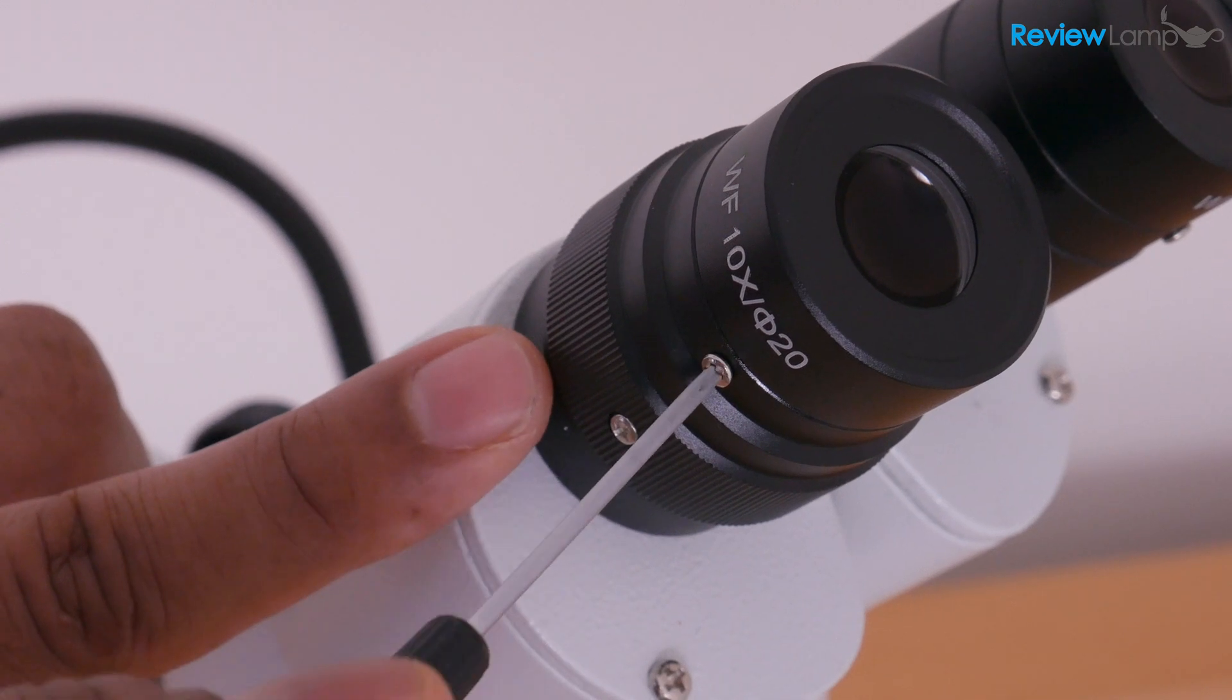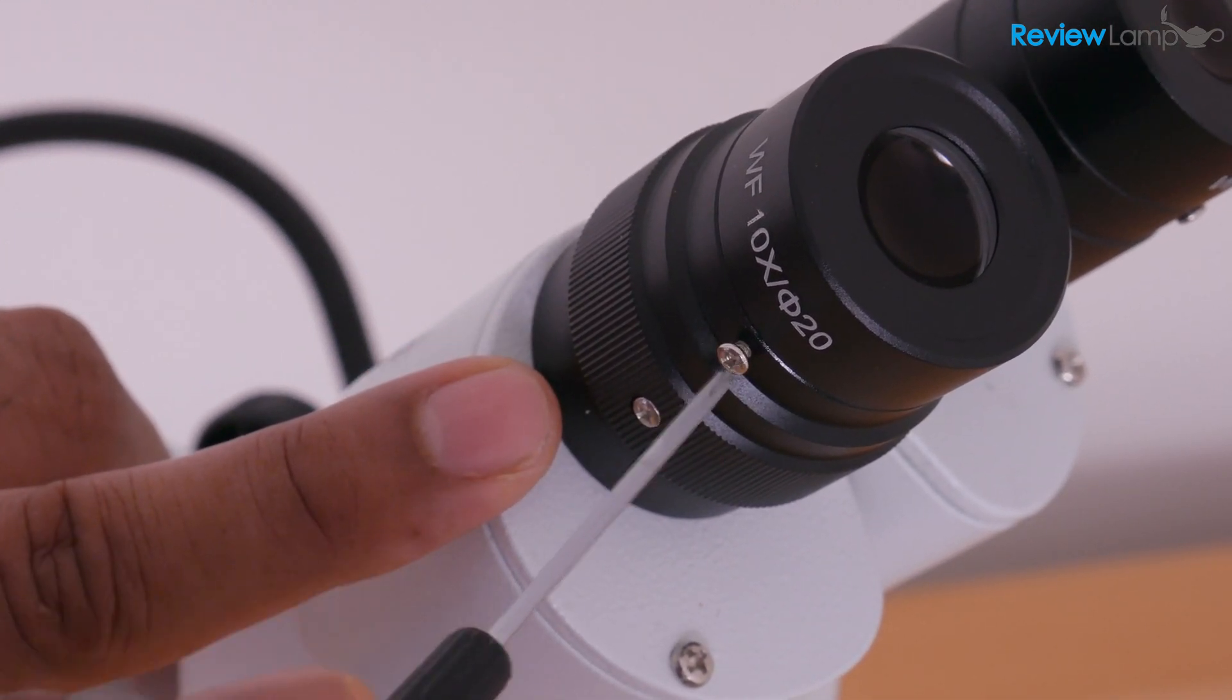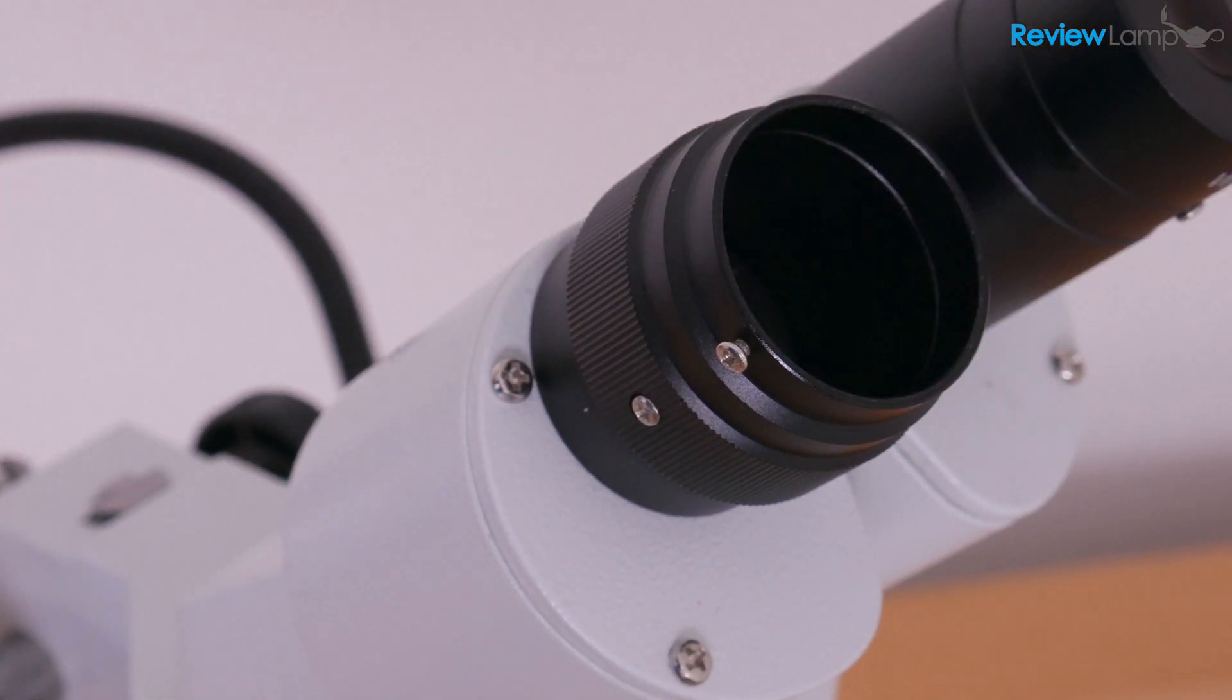So what we're going to do is we're going to unscrew that screw gently. You don't have to remove the whole screw, just a couple of turns. And then the eyepiece will loosen up and will pull out.